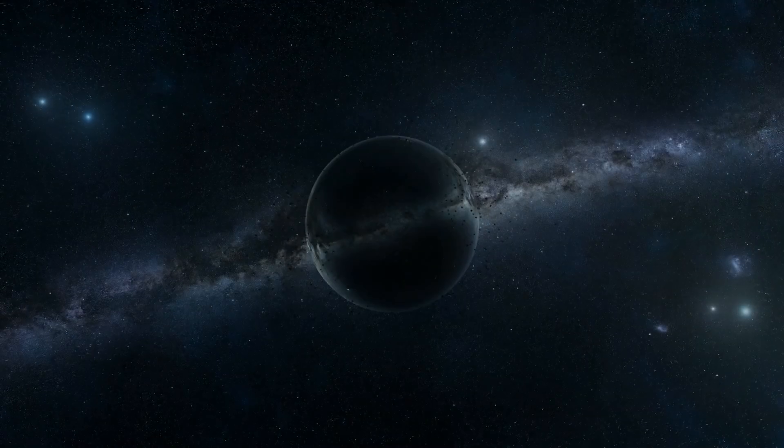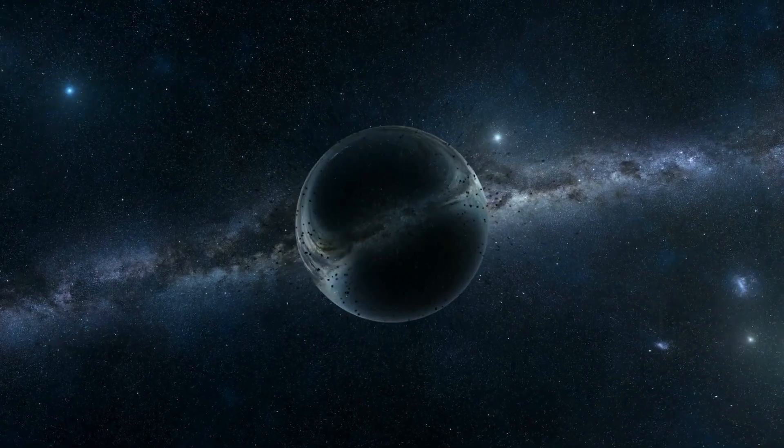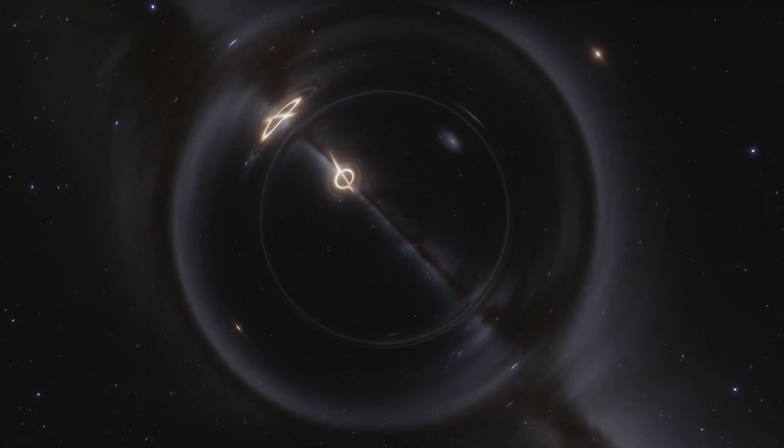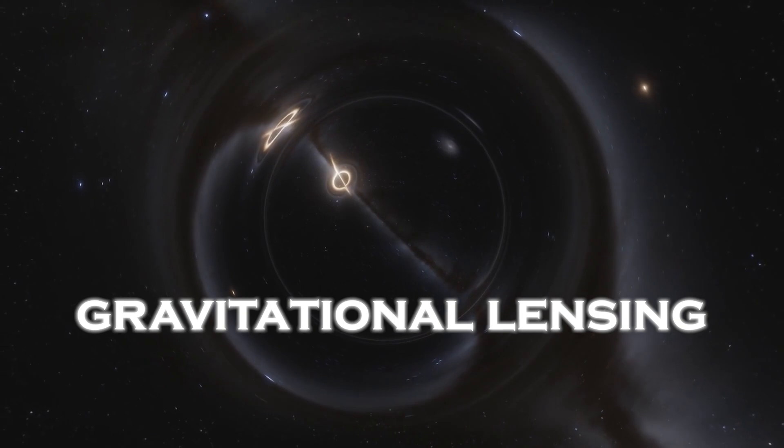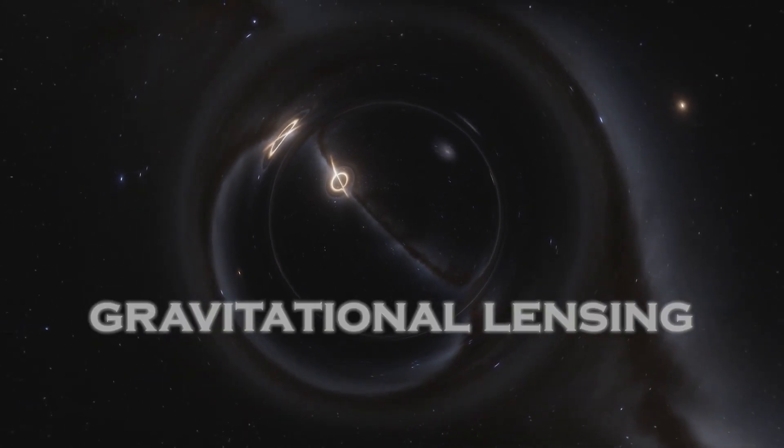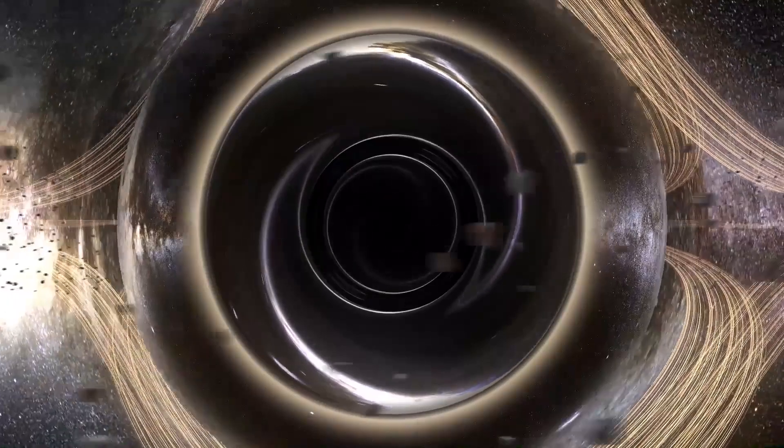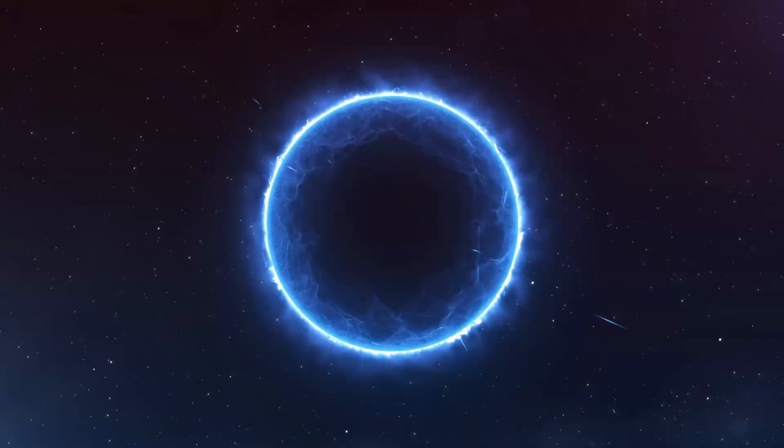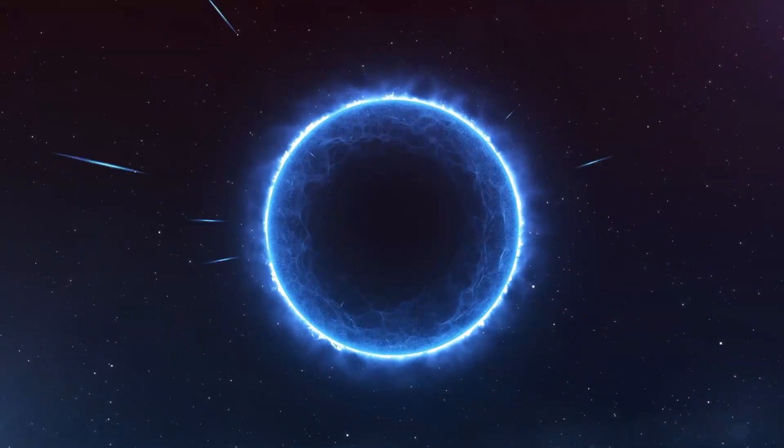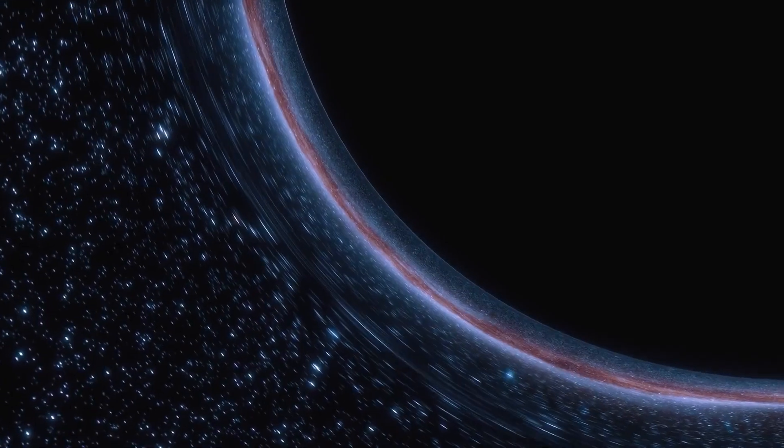When light from stars or galaxies passes close to them, its trajectory is deflected by the black hole's enormous gravity, creating an effect called gravitational lensing. This phenomenon allows astronomers to detect and study black holes indirectly, by analyzing their gravitational influence on nearby objects.